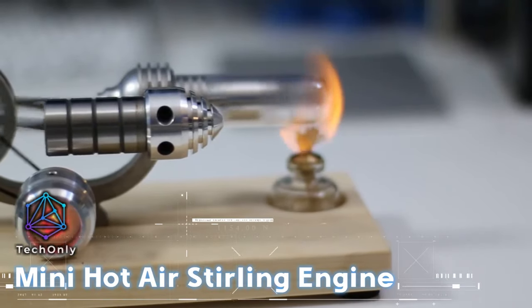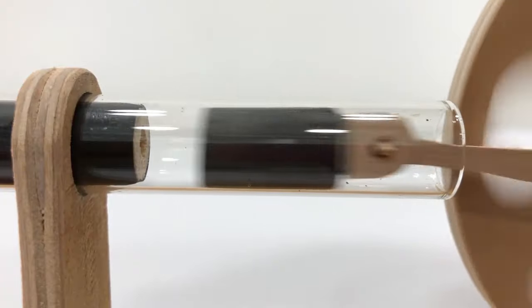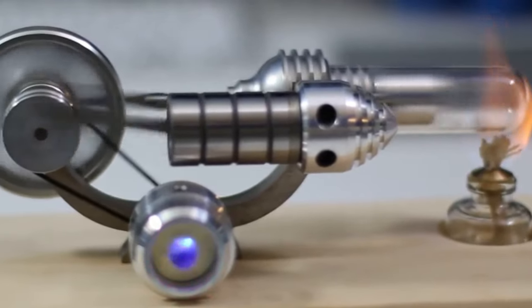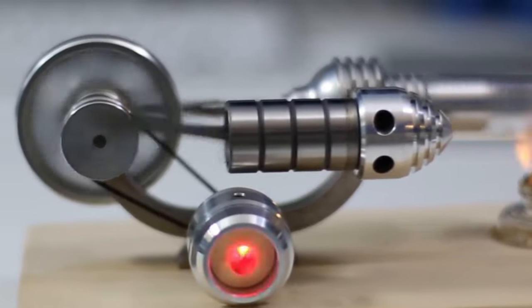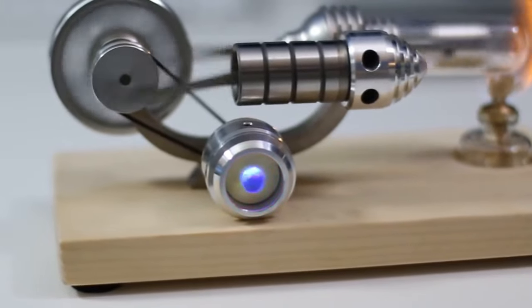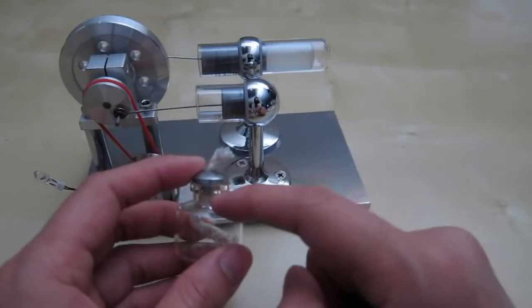The hot air Stirling engine works by using the heat generated by an external heat source, such as burning alcohol, to expand and contract the air inside a cylinder, which drives a piston to produce mechanical energy. This mechanical energy is then converted into electrical energy or used to power a mechanical device.